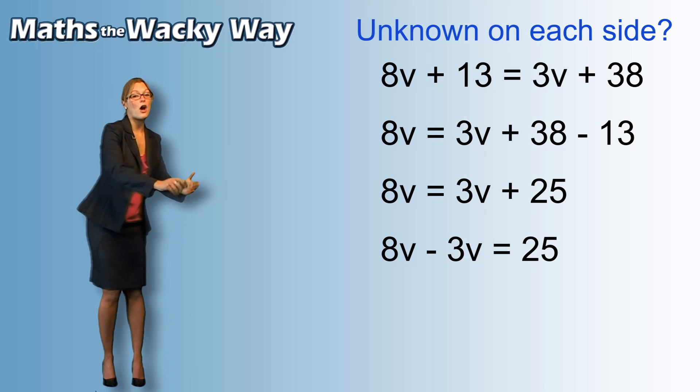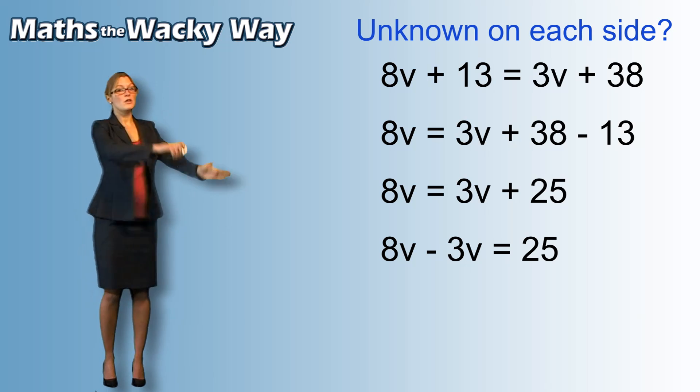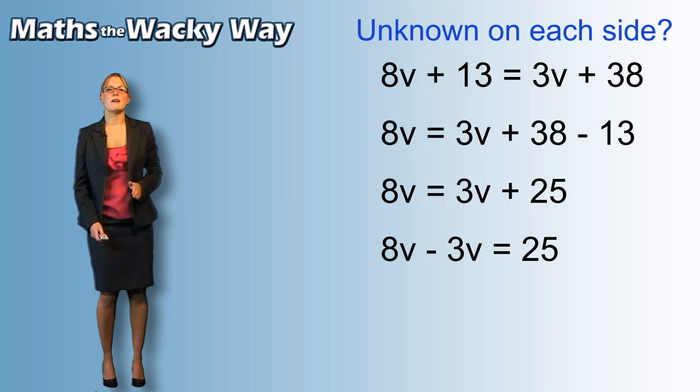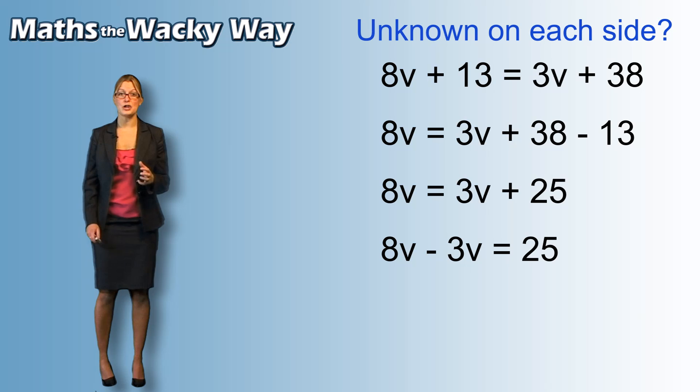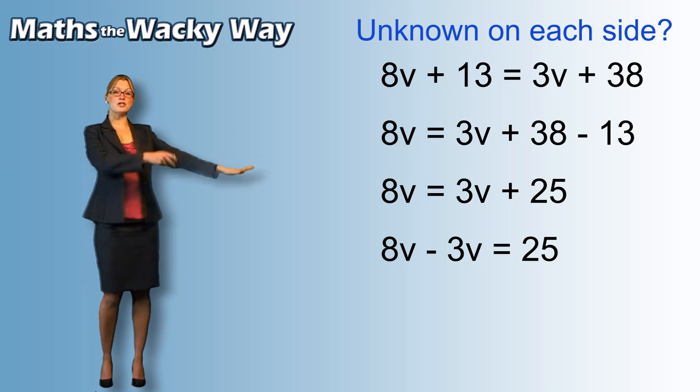We're moving the 3v as a whole, which is adding to the other side where it will subtract. And that's the last movement that we need to do in order to get the sides to be the v side and the non-v side.